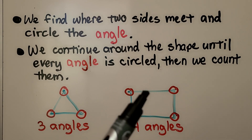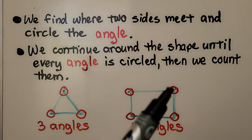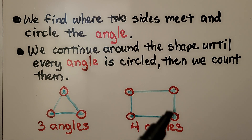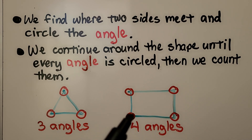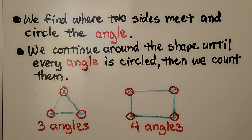We do the same thing. This side and this side are meeting right here. So that's one, two, three, four angles. So a triangle has three angles and a quadrilateral has four angles.